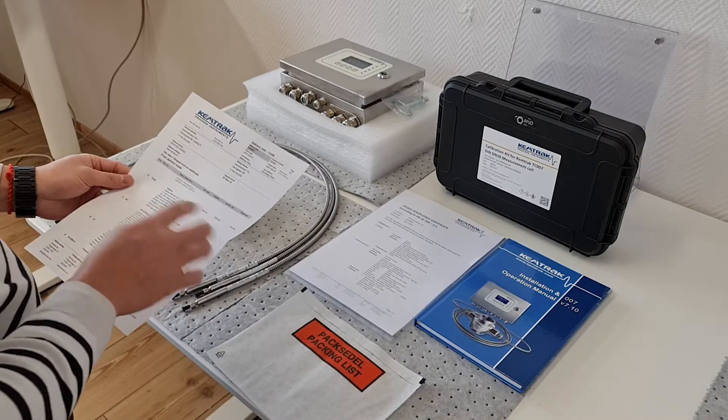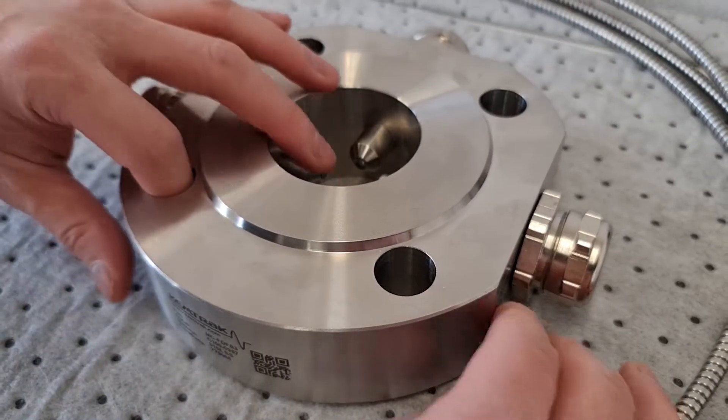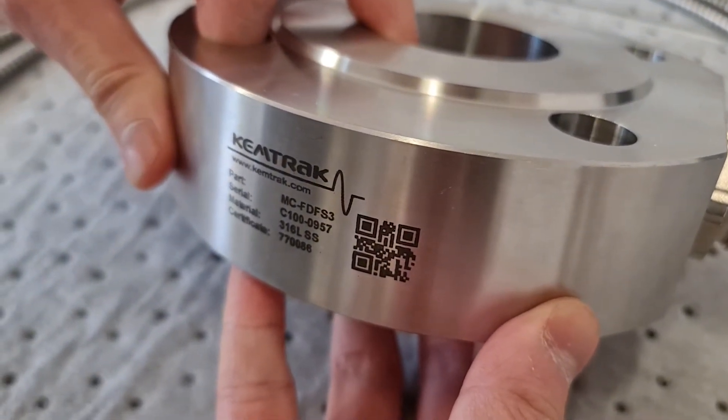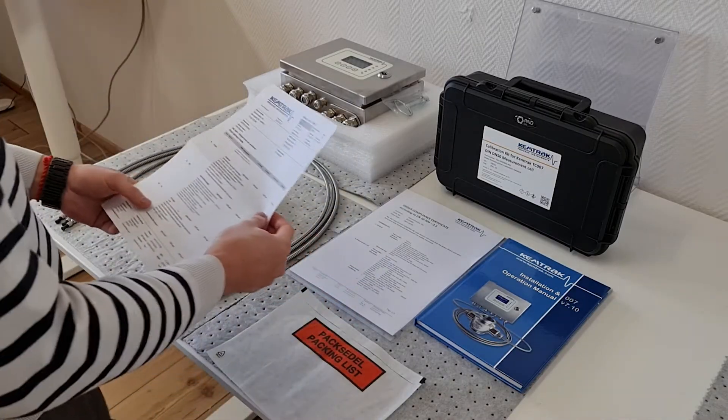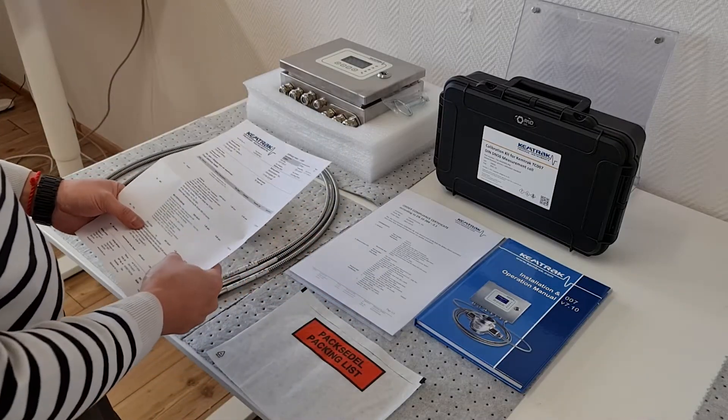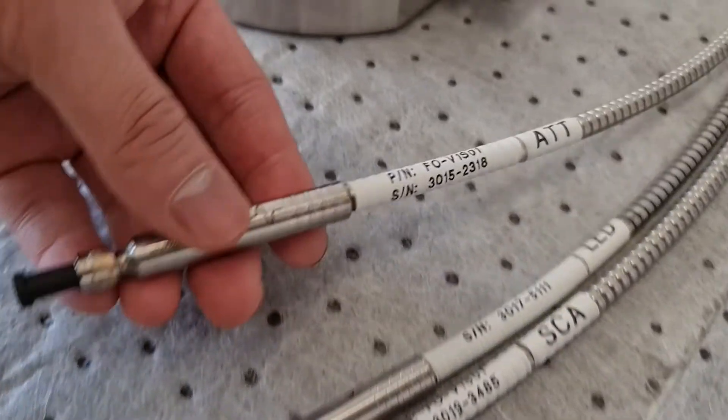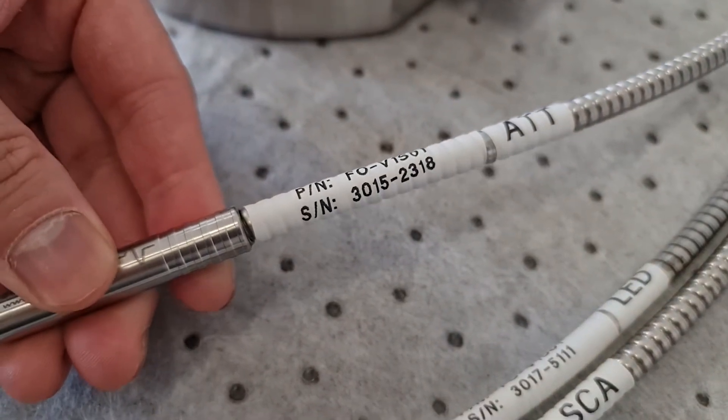The second item to confirm is the measurement cell. The part number of the measurement cell is etched on the front of the product. The third item to confirm are the fiber optic cables that link the analyzer to the measurement cell. Be sure to check the length and quantity of fibers received and match what has been ordered.